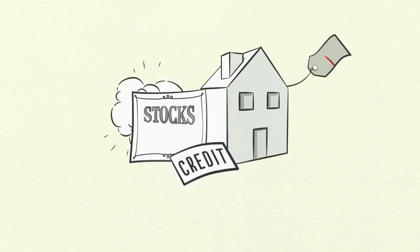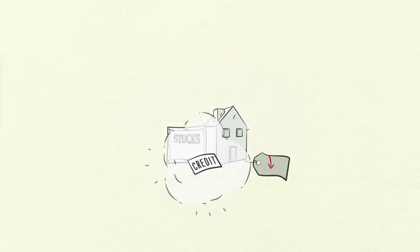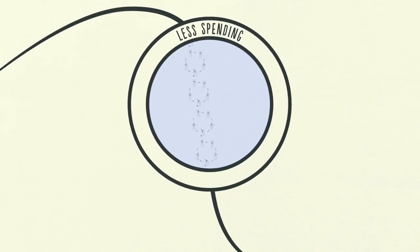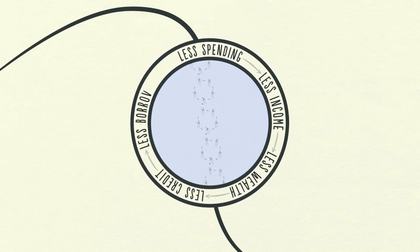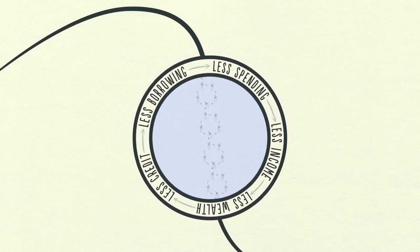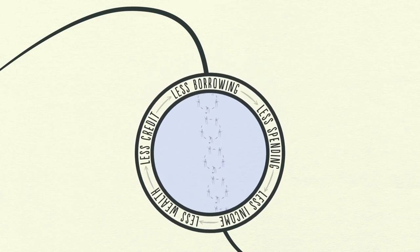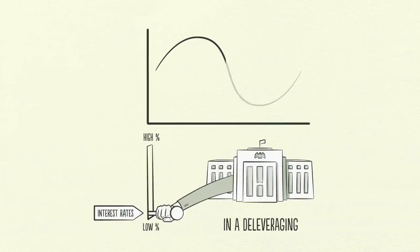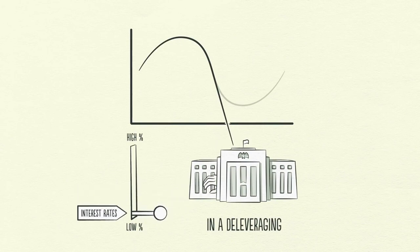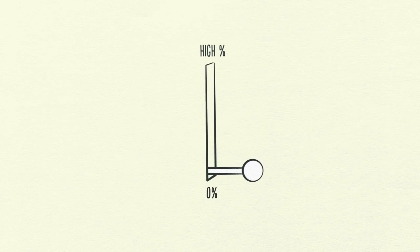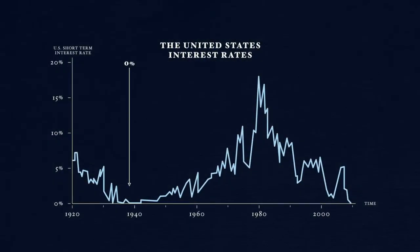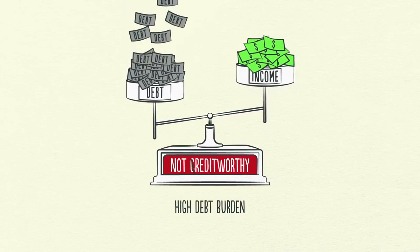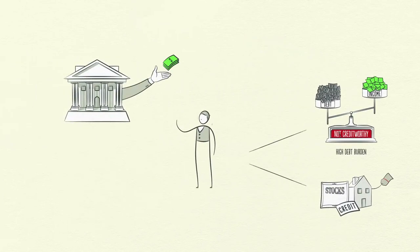As asset prices drop, the value of the collateral borrowers can put up drops, making borrowers even less creditworthy. People feel poor, credit rapidly disappears, and you get less spending, less income, less wealth, less credit, less borrowing — a vicious cycle. This appears similar to a recession, but the difference is that interest rates can't be lowered to save the day. In a deleveraging, lowering interest rates doesn't work because interest rates are already low and soon hit 0%, so the stimulation ends. Interest rates in the United States hit 0% during the deleveraging of the 1930s and again in 2008. The difference between a recession and a deleveraging is that borrowers' debt burdens have simply gotten too big and can't be relieved by lowering interest rates.